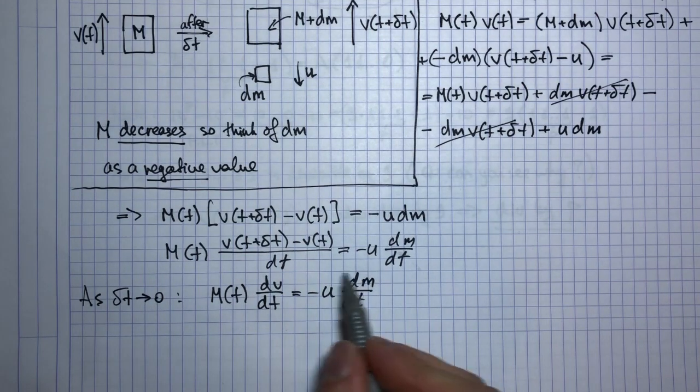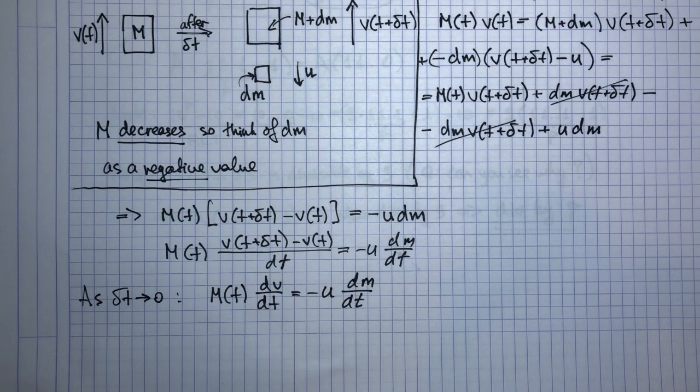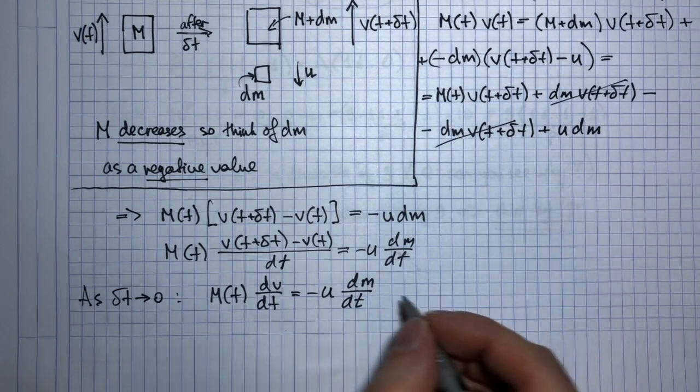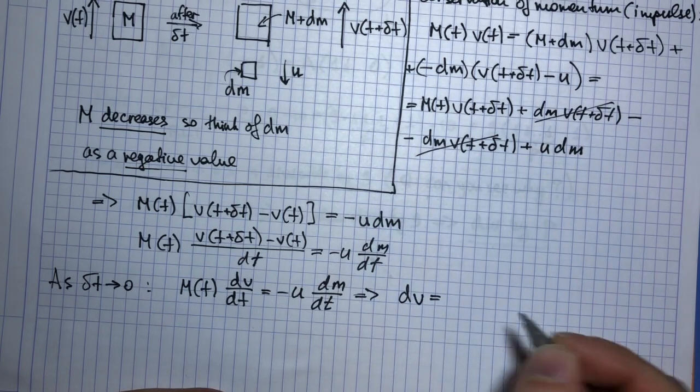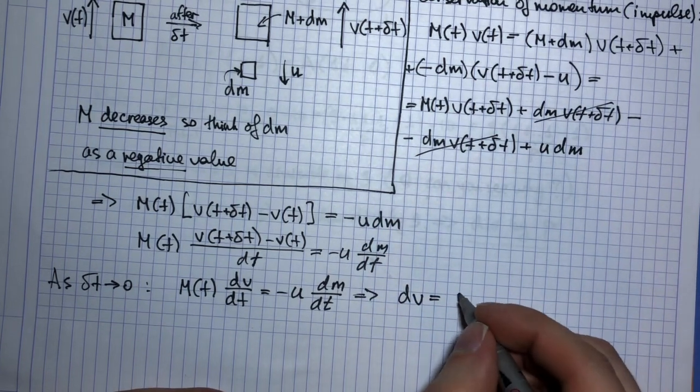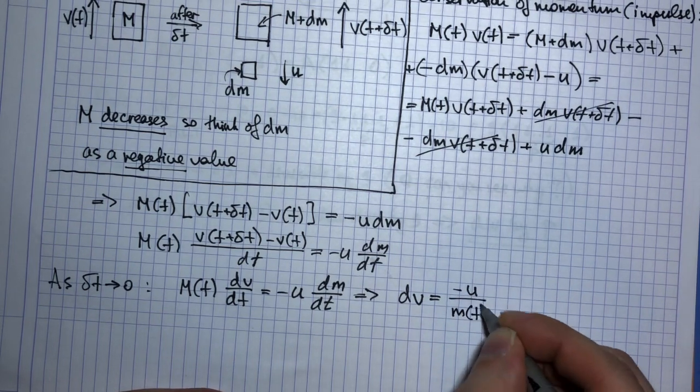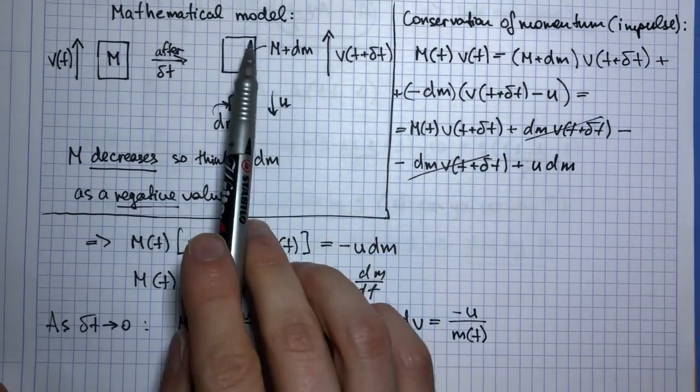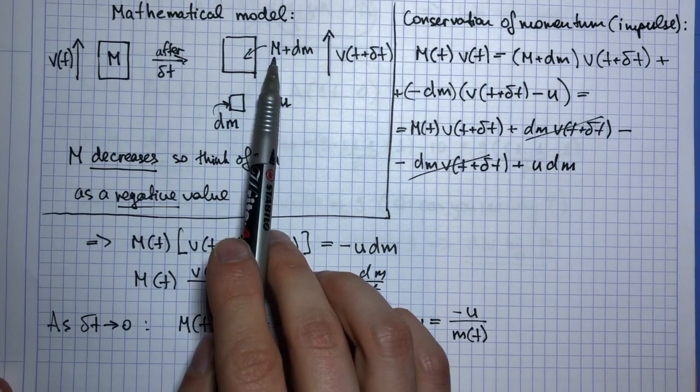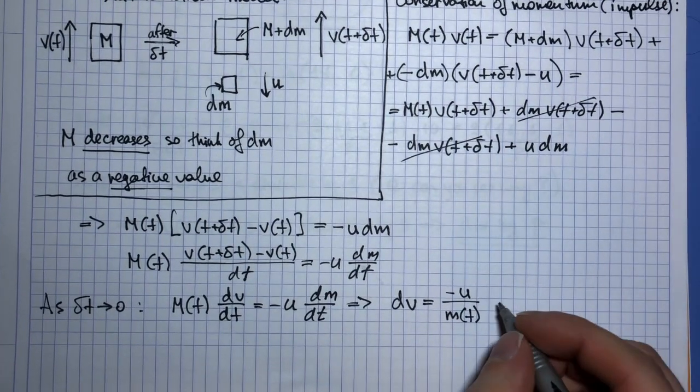And it is separable. So what do we get? We get that dv is minus u over m(t) times dm. So maybe it was more reasonable to denote this mass with a smaller m, but anyway you get the idea.